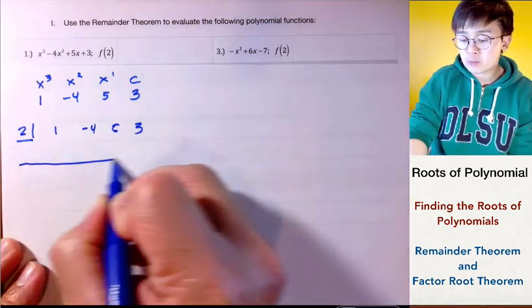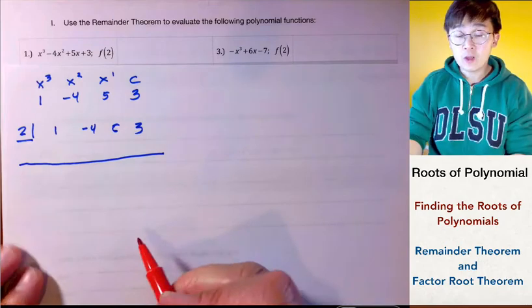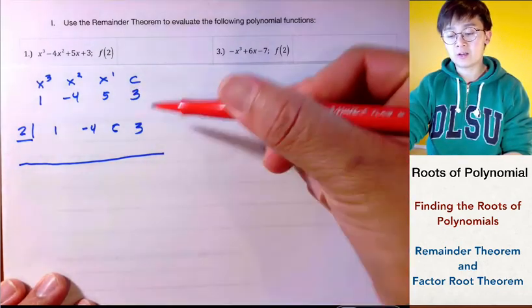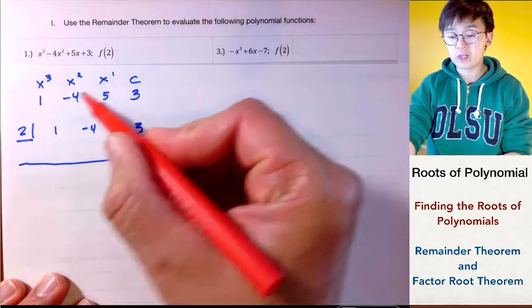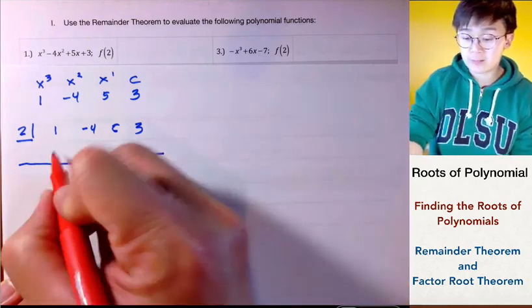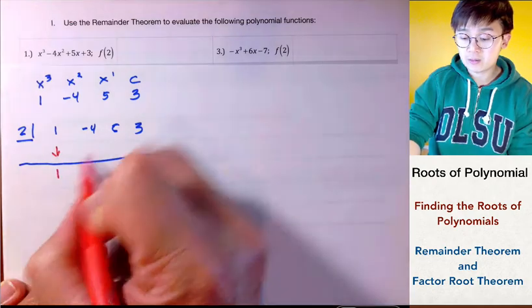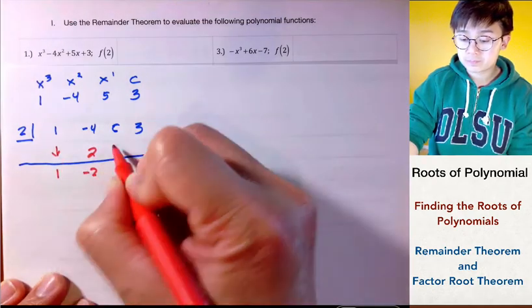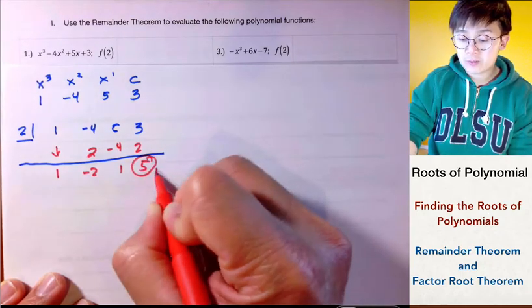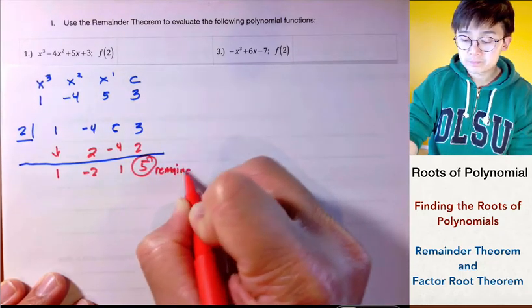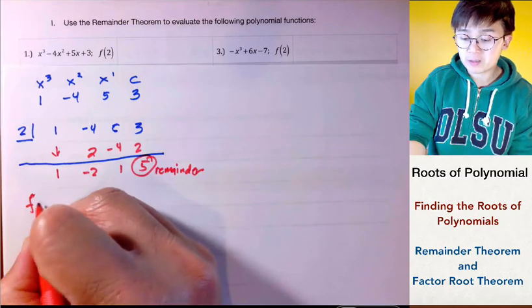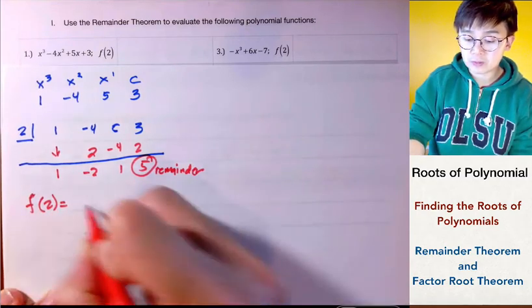This will be quick because all you need to do is find the value of f of 2 by finding the remainder, because the remainder when dividing by 2 will be your f of 2 — that is according to the remainder theorem. Using synthetic division, our remainder is f of 2 equals 5.